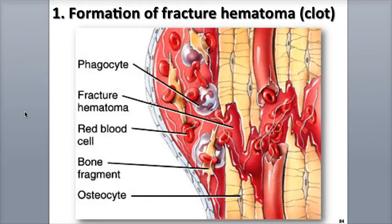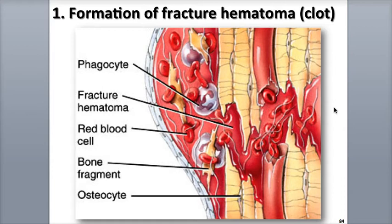During the first phase, the reactive phase, inflammation is triggered as a result of the injury and the damage inflicted on severed blood vessels. A mass of clotted blood, called the fracture hematoma, builds up around the fracture, usually six to eight hours after the injury occurred.